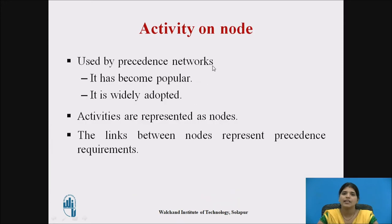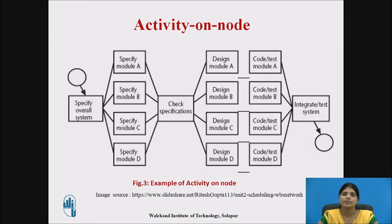Then we see activity on node. This is a very popular method used by precedence networks. In this approach, activities are represented as nodes, and the links between nodes represent precedence requirements. Here is an example of activity on node — each activity is represented inside the node, and each node is connected with the help of arrows.